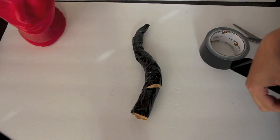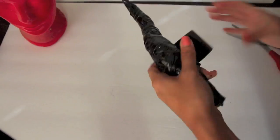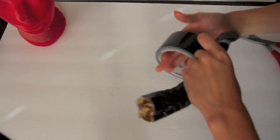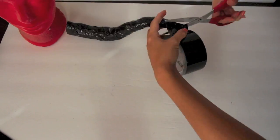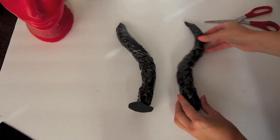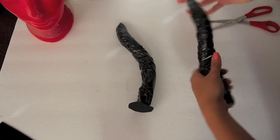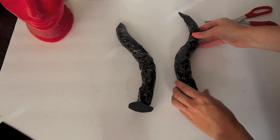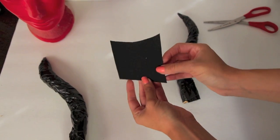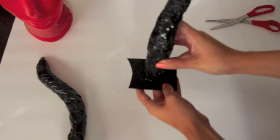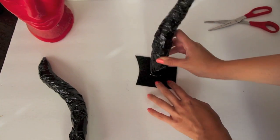And once you have them covered once, you're actually going to cover them one more time to make them nice and thick and to make sure that we don't see any of the craft paper underneath it. So as you can see here, both of my horns covered.